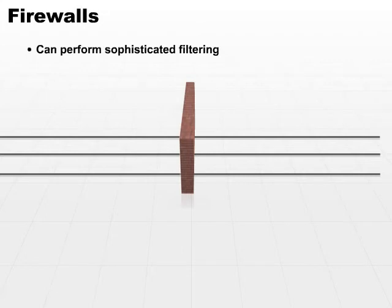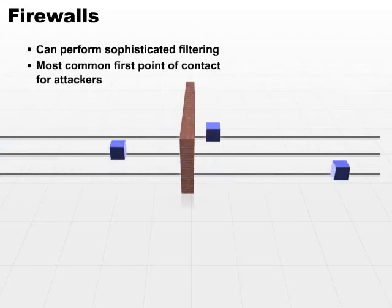Now, since firewalls are specifically designed to stop the bad packets from getting through, they tend to be the most common initial contact point for attackers. In order for an attacker to get into your corporate intranet, he first off has to either find a way through or around your firewall. So that's why most firewall hardening